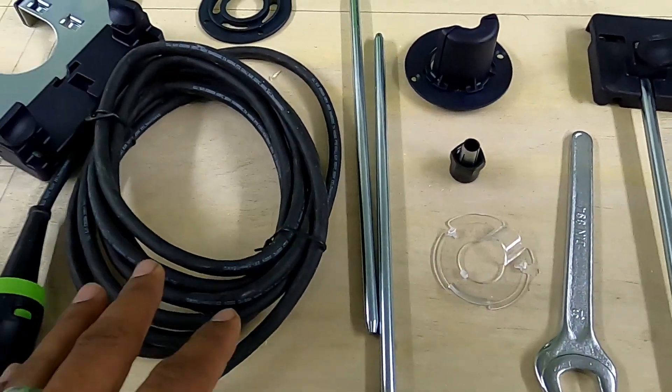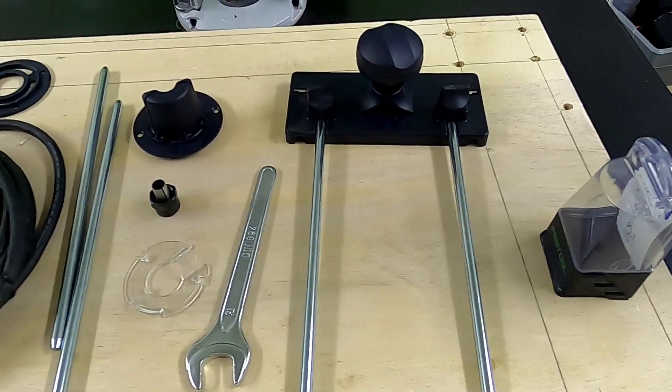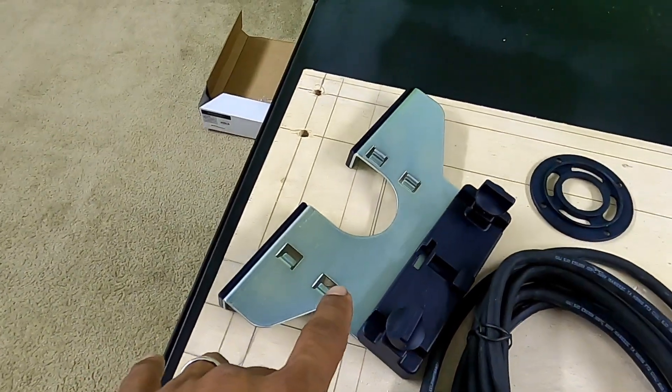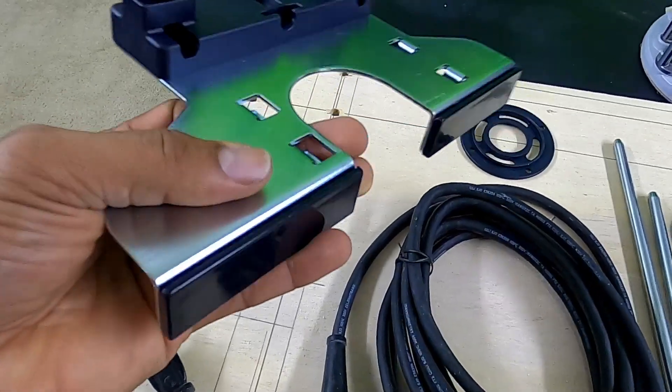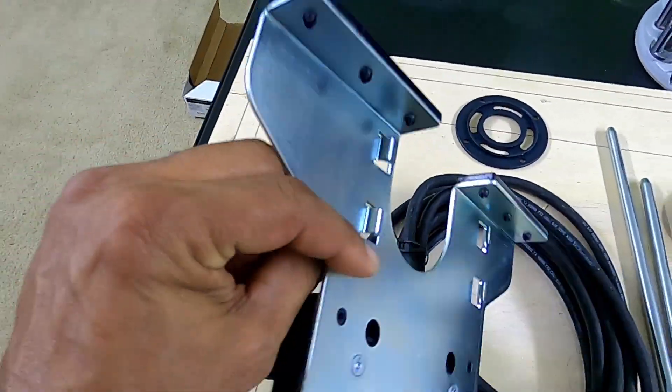I also purchased some extra accessories, including the actual edge guide for the 1010. If you look at it here, it's a piece of metal that's non-adjustable. Looking on the backside, it comes with two rods.